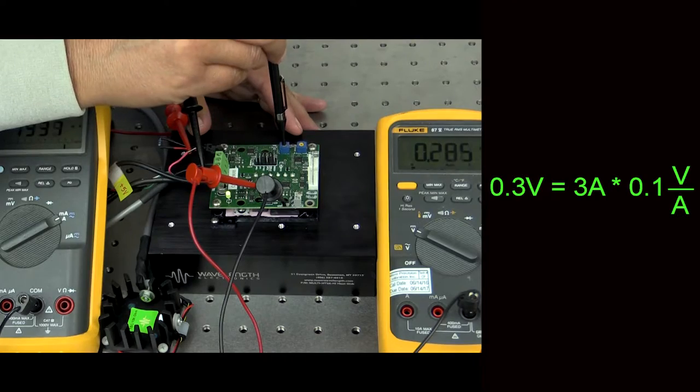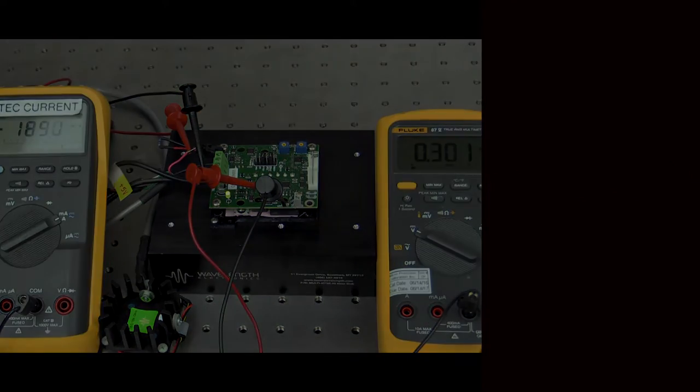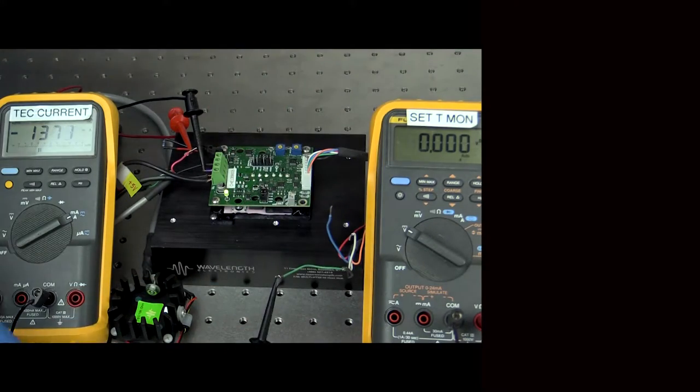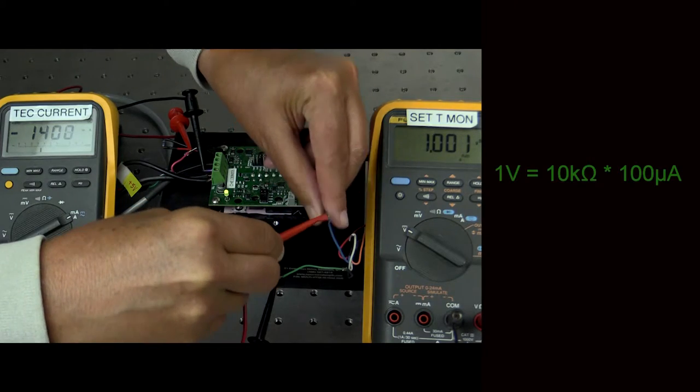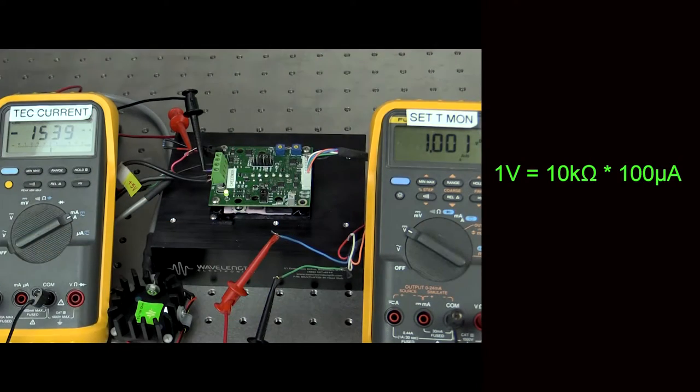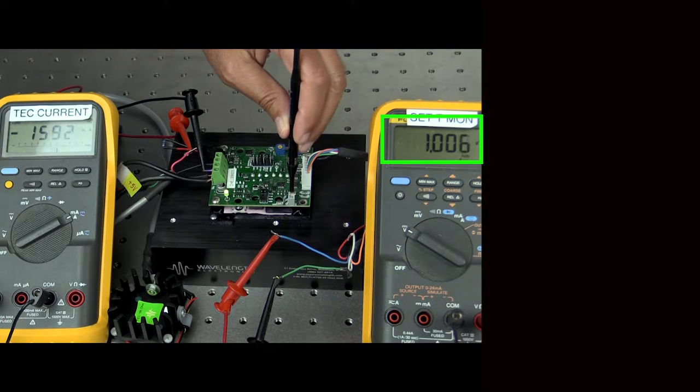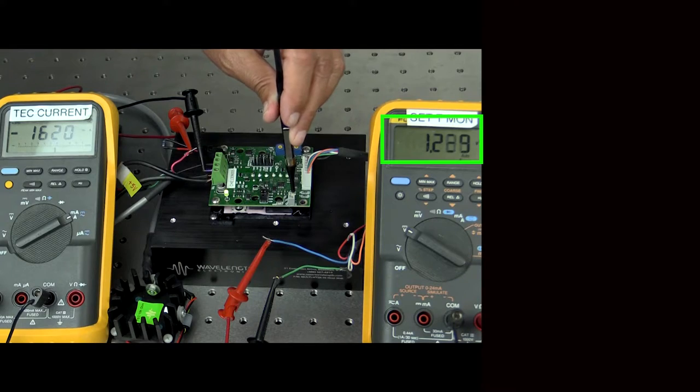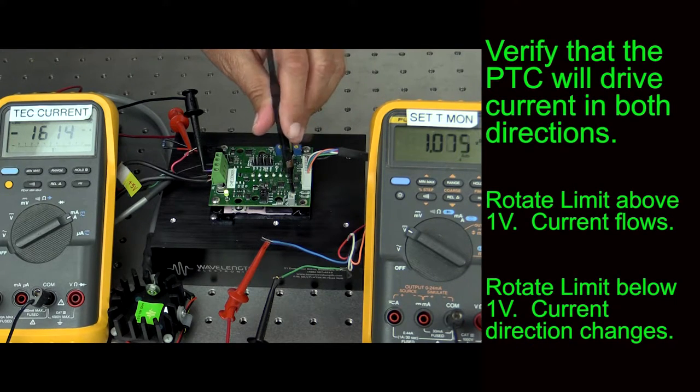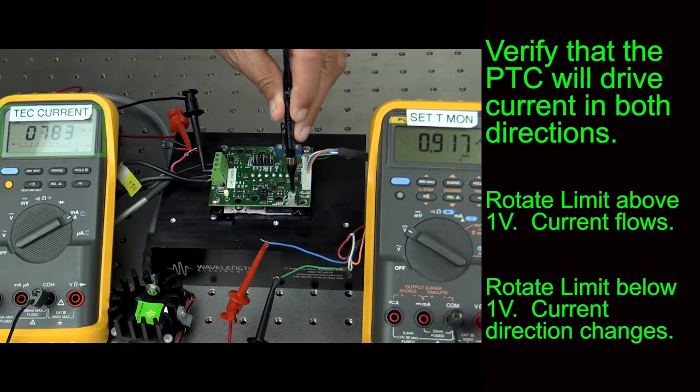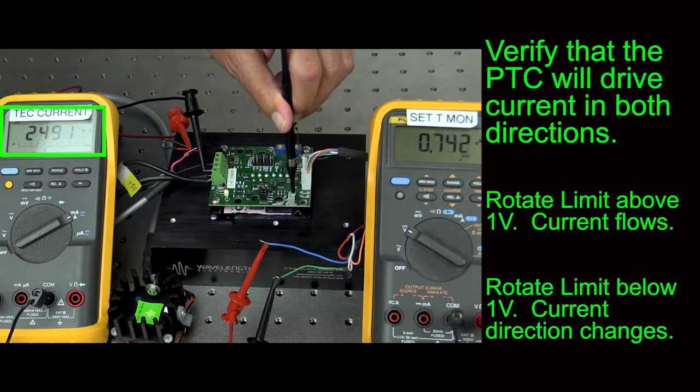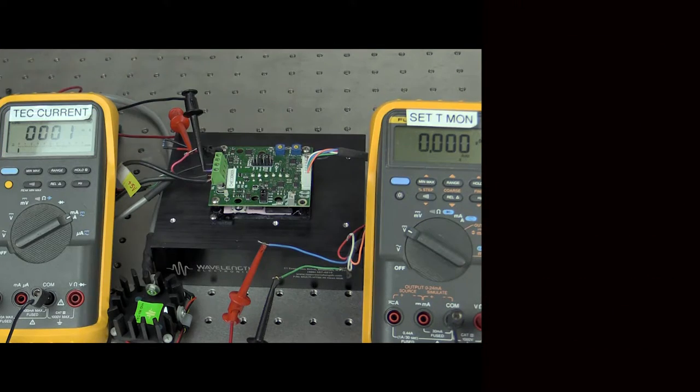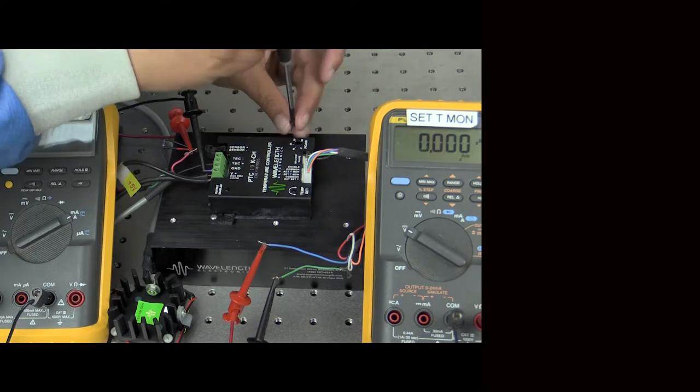Now we can rotate the limit current trim pot until the voltmeter reads 0.3 volts. Set up another voltmeter to monitor the setpoint across pins 4 and 5 of J3. The 10k ohm of the resistor times the 100 microamp bias current will produce a 1 volt signal at the sensor input. Rotate the setpoint trim pot so it goes above 1 volt. Now rotate the setpoint trim pot so the voltage is below 1 volt. The current direction changes. The sign on the current changes. Now you know the controller can drive current in both directions. You can turn off the power supply now and replace the cover.